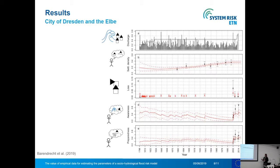We use this data to estimate the parameters and then simulate the response of the system. On the x-axis is time. In the top panel we see the discharges and the protection level — every time the discharge exceeds the protection level, flooding occurs and results in damage shown in red. When damage occurs, the awareness goes up, and if there are no events, the awareness goes down over time. The same holds for preparedness: if awareness increases, preparedness increases as people take measures, but it also declines over time if nothing happens.